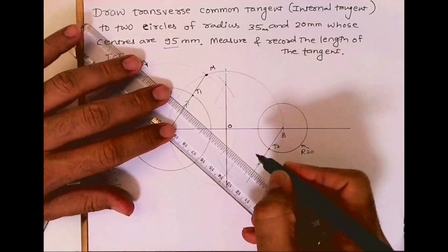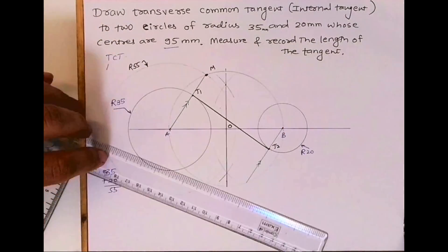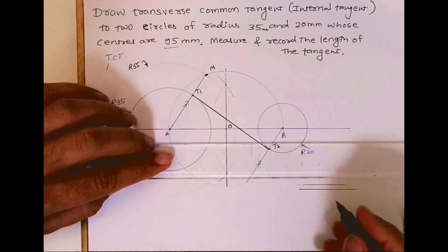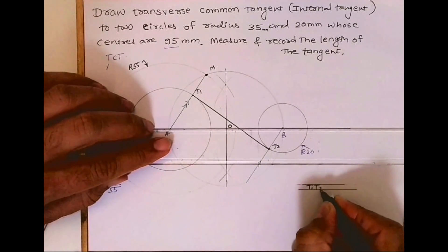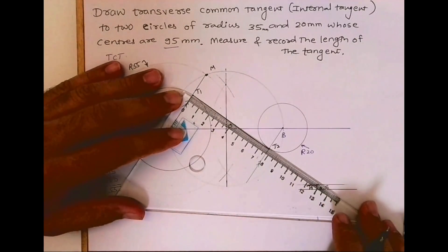Now join T1 to T2 as shown in the figure. This is the tangent. In exams they may ask you to draw two tangents. You can measure it; it is somewhere around 78mm.